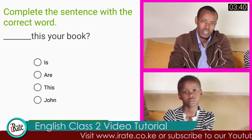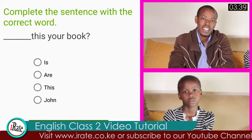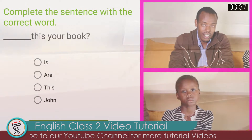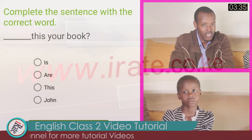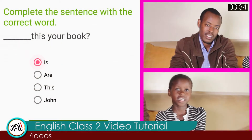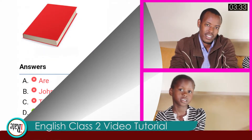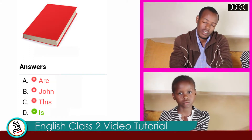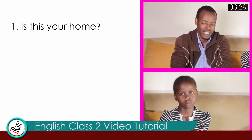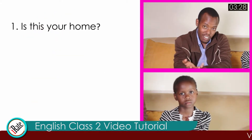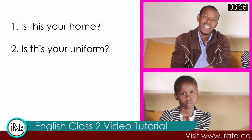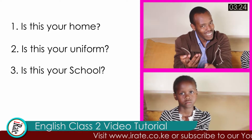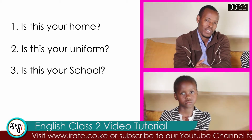Question number two: complete the sentence with the correct word. Dash — is this your book? What is your answer? Is. That is very good. We can use 'is' to ask questions. For example: Is this your home? Is this your uniform? Is this your school? And much more.